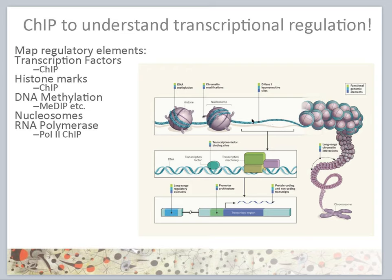Moreover, an expressed gene is going to be in a region of DNA that is not packed — it's going to be in a chromatin region that is open. Such chromatin regions are sensitive to the DNase enzyme, and this is another thing that can be monitored by chromatin immunoprecipitation.